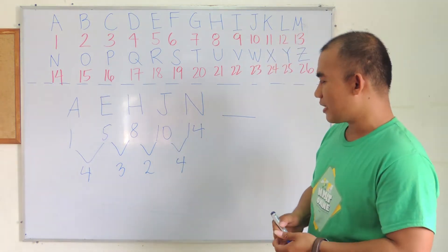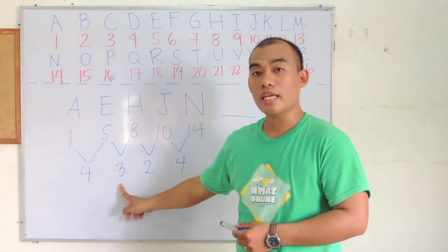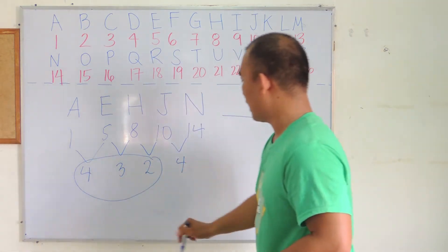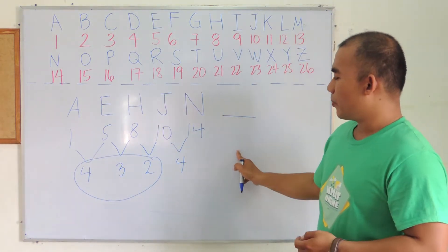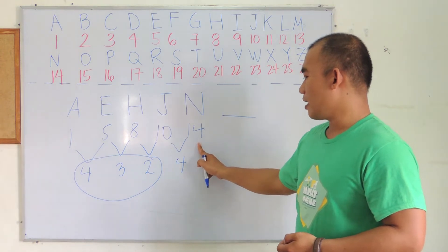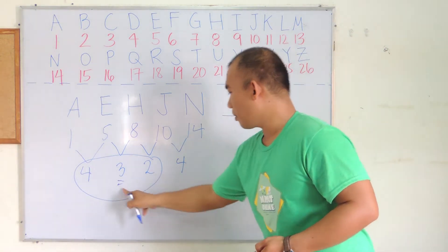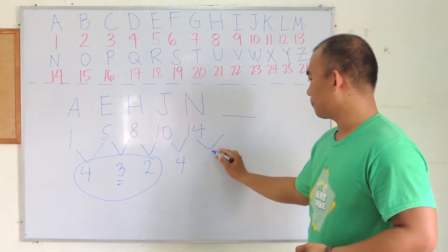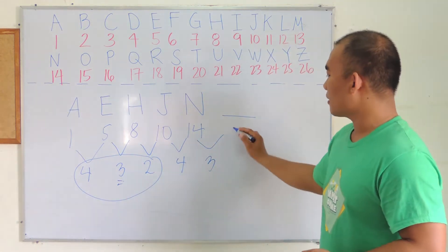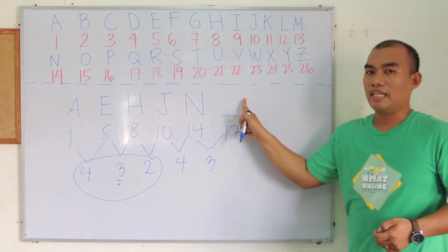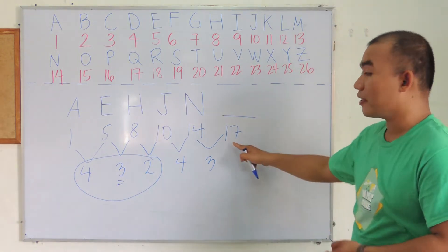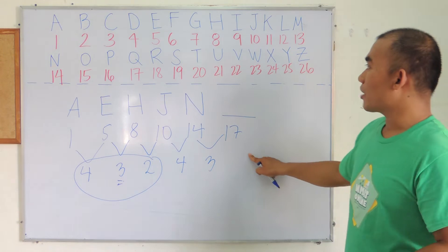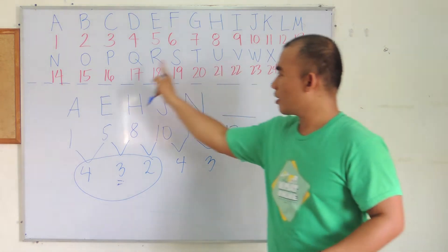Observe that we have a cycle: 4, 3, 2. So therefore, the next number after 14 will be 14 plus 3, and that gives us 17. So the next letter in our letter series is the 17th letter in the English alphabet, which is Q.